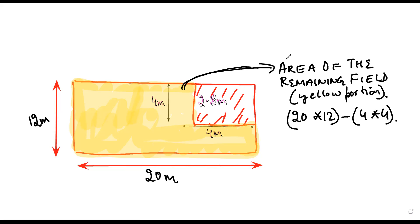First you will have to calculate this. This would be 240 minus 16, this would be 224 square meters. Is it clear? Yes sir. Now the earth, the soil is being taken from this pit.